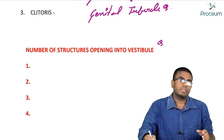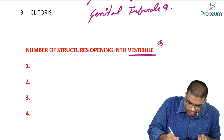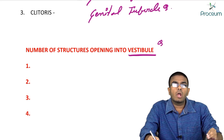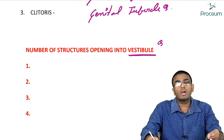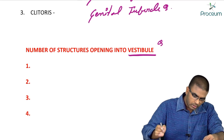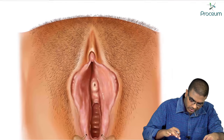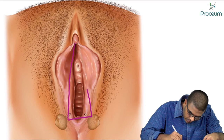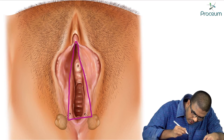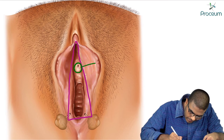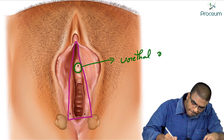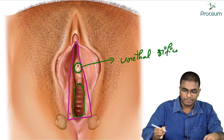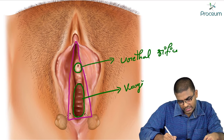Now an important MCQ: all of the following structures are opening into the vestibule except — you should know what structures open into the vestibule. Into the vestibule, we have an opening which is the urethral orifice, and below that, we have the vaginal opening.